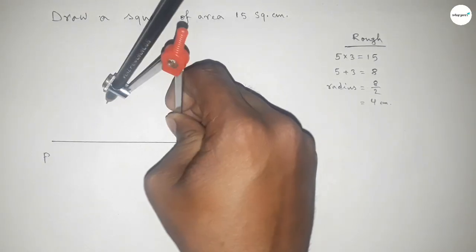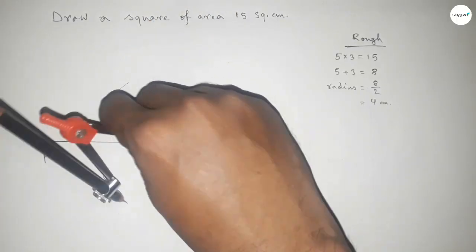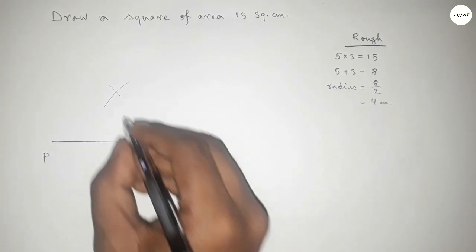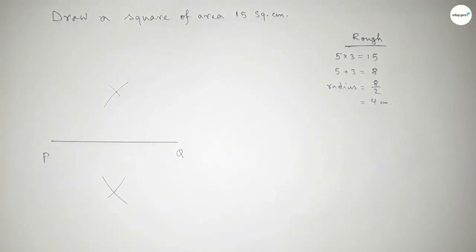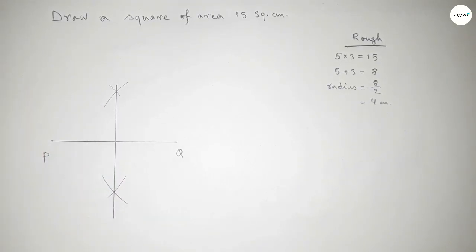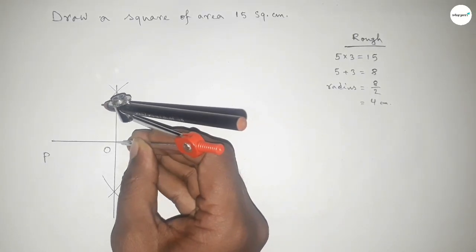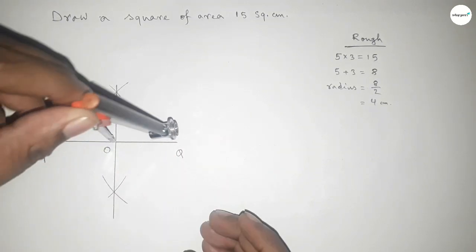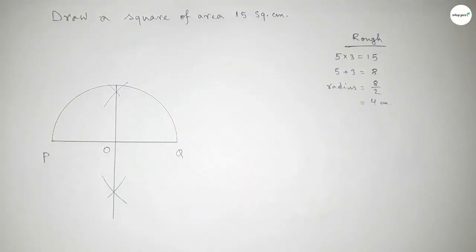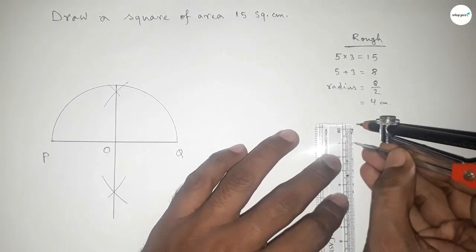Next, bisecting the line PQ — taking greater than half of PQ and drawing arcs with the same length, cutting the arc both ways so the curves intersect at two points. Joining this, which bisects at a point O. Now taking the length OP and OQ to draw the semicircle, so we got our semicircle with radius 4 centimeters.